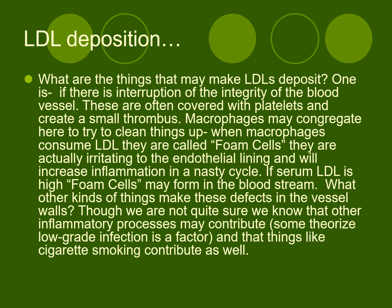Smoking causes inflammation and various types of damage to vessel walls. When damage occurs, platelets aggregate and try to form a thrombus. If LDL has formed foam cells there, macrophages — white blood cells — come to clean things up but actually form foam cells that are irritating to the endothelial lining, increasing inflammation in a vicious cycle. Aspirin may have a double effect: it blocks thromboxane A2 involved in platelet aggregation and may also decrease inflammation.